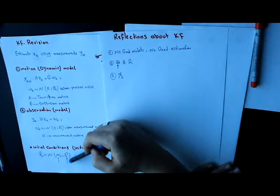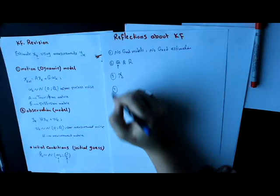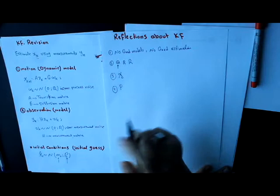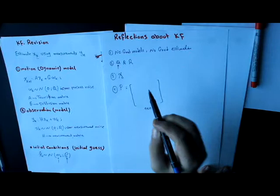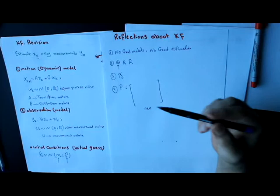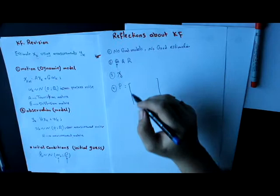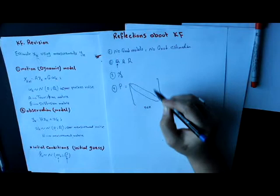The fourth point is the covariance matrix itself. The covariance matrix is a square matrix with a dimension n by n, where n is the number of components in the state vector. Basically, it consists of two different types of elements: the diagonal elements and the off-diagonal elements.